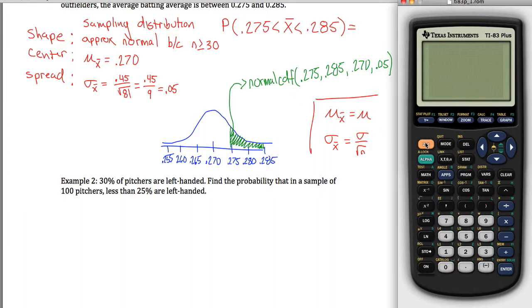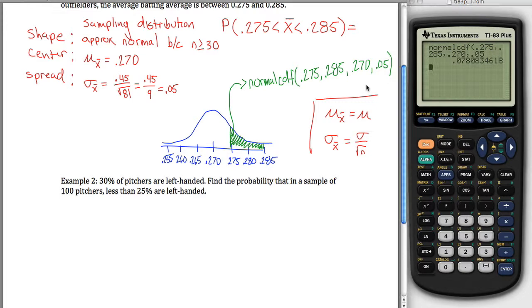So to get to normalCDF, that's under distributions. So I'll hit second, variables to get that. The second one here is normalCDF. And then if I type in all those values: 0.275, 0.285, what was my mean, 0.270? And my standard deviation was 0.05. It will give me a probability. In this case, it gives me 0.078. So what I get is that the probability that x̄ is between these two values is 0.078, or if you prefer percentages, that shaded area is 7.8%.